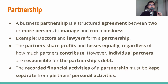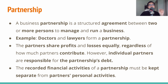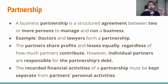The second kind of economic entity is a partnership — a business established by a structural agreement between two or more persons to manage and run a business. For instance, doctors and lawyers can form a partnership. Famous partnerships include Uber and Spotify, and Apple and MasterCard. Like proprietorship, partners share profits and losses equally, regardless of how much each partner contributes. However, individual partners are responsible for the partnership's debts. In accounting, we must separate the financial activity recording of a partnership from the partners' personal financial activity recording.